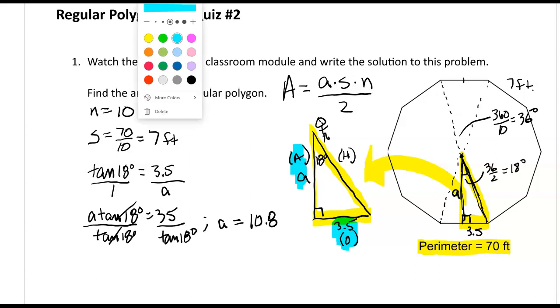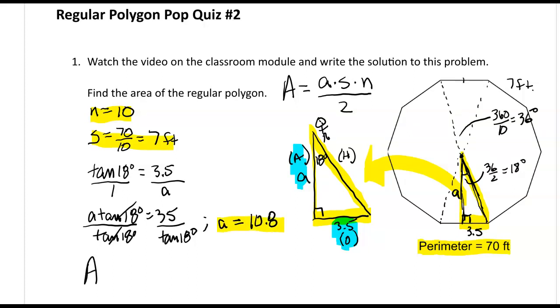Okay, so now I have N, I have S, and I have A. I have everything I need, so the area is going to be 10.8 times 7 times the number of sides, 10, divided by 2, which will be 378 feet squared.